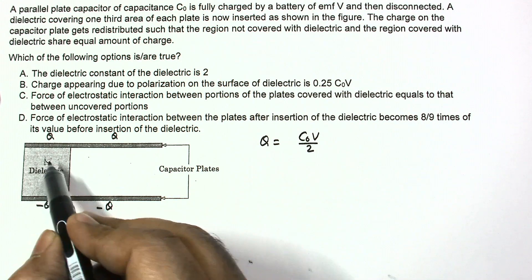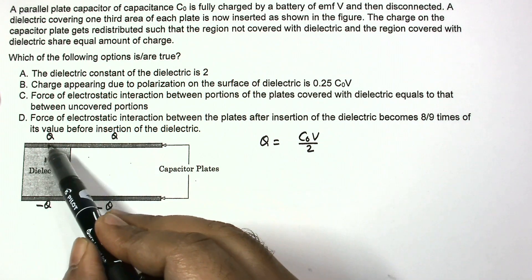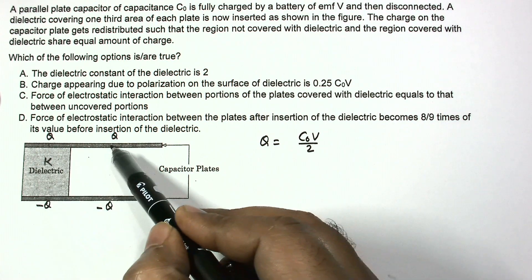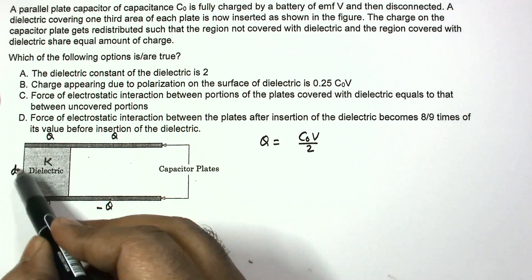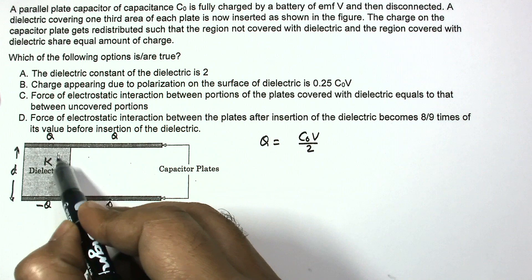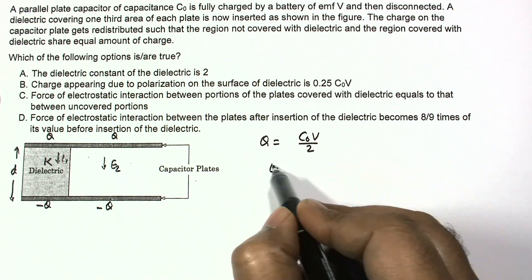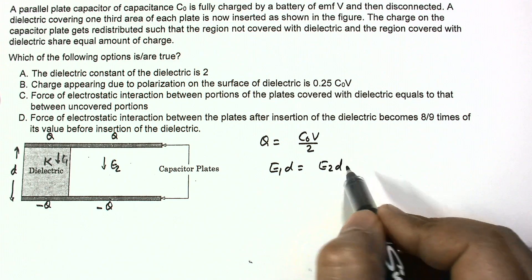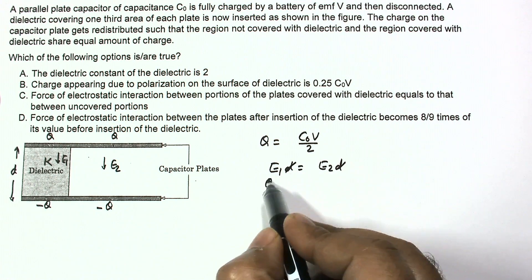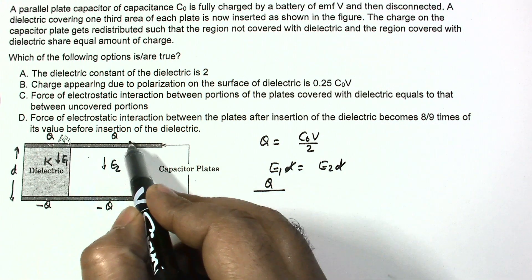Suppose the dielectric constant is K. If I go from one metal plate to the other, the potential difference should be equal across both sections. Suppose the distance between the plates is D. The potential difference equals E₁·D on the uncovered side and E₂·D on the dielectric-covered side. So E₁ = E₂, meaning the D cancels. E₁ is charge divided by area.